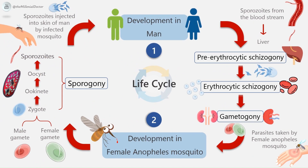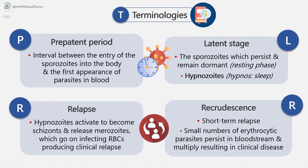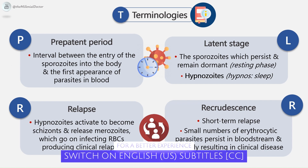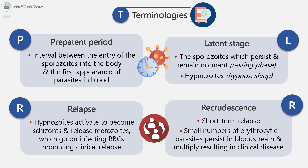Certain terminologies: The pre-patent period is the interval between the entry of sporozoites into the body and the first appearance of parasites in blood. The duration of the pre-erythrocytic phase in the liver, the size of the mature schizont, and the number of merozoites produced vary with the species of the parasite. Regarding the latent stage: in Plasmodium vivax and Plasmodium ovale, two kinds of sporozoites are seen — some multiply inside hepatic cells to form schizonts, while others persist and remain dormant in a resting phase. These resting forms are called hypnozoites, derived from 'hypnos' meaning sleep. From time to time, some hypnozoites are activated to become schizonts and release merozoites, which go on infecting RBCs, producing clinical relapse.